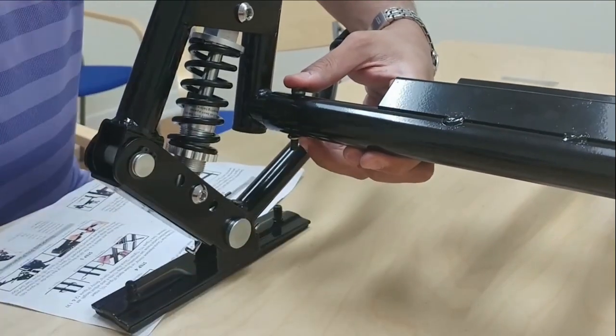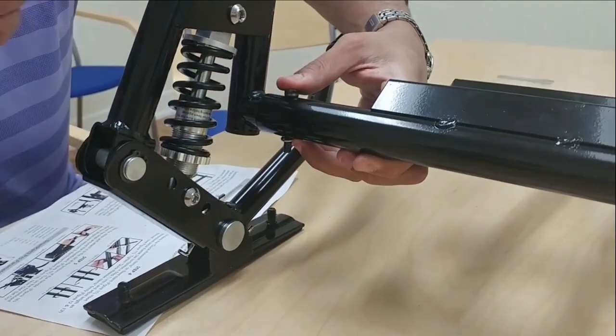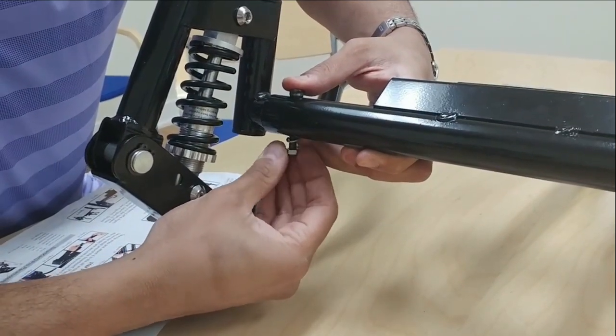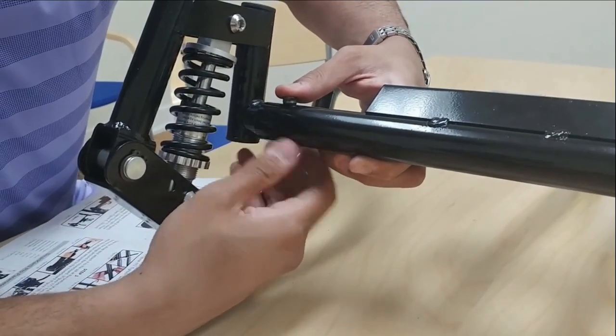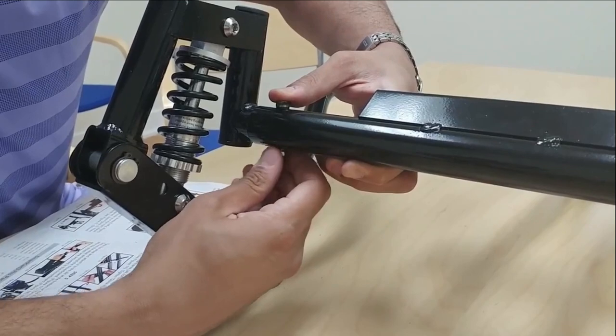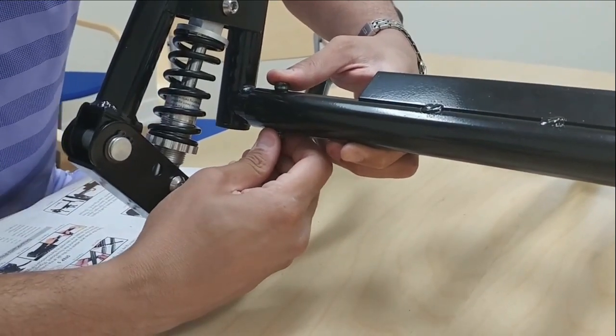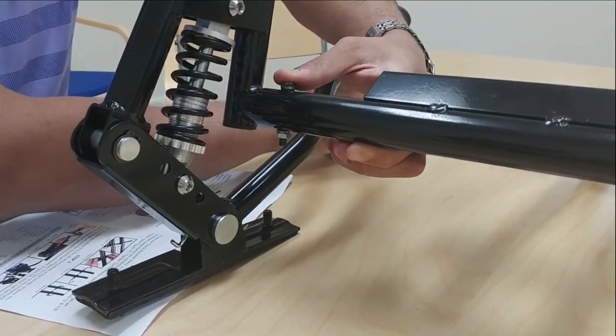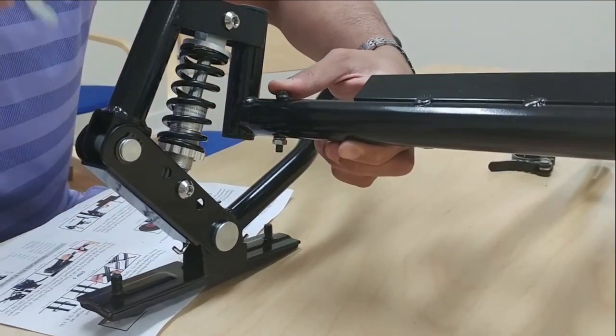This is why it's important to have a flat surface to work with. Some stages might be a little bit difficult to manage. So you just twist that on, and use its corresponding wrench to tighten.